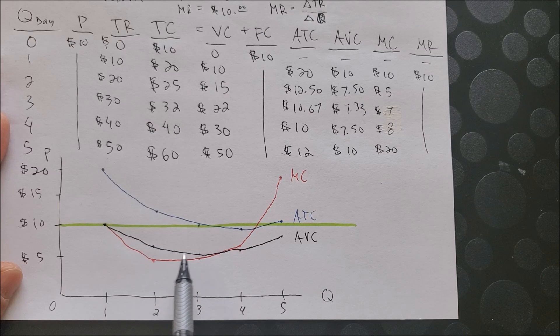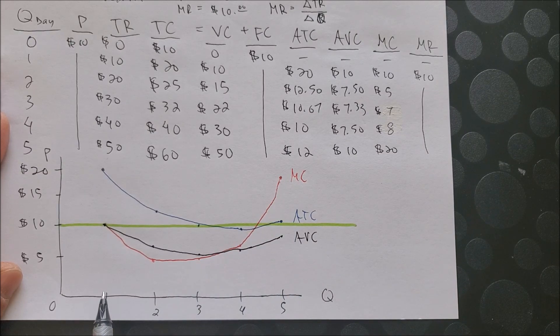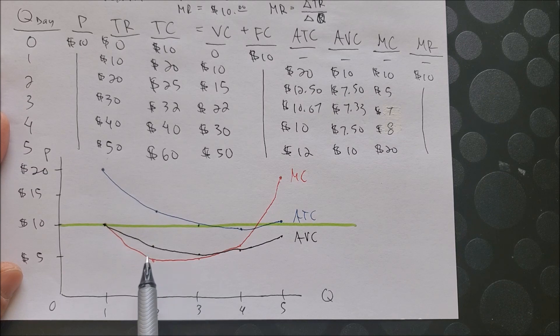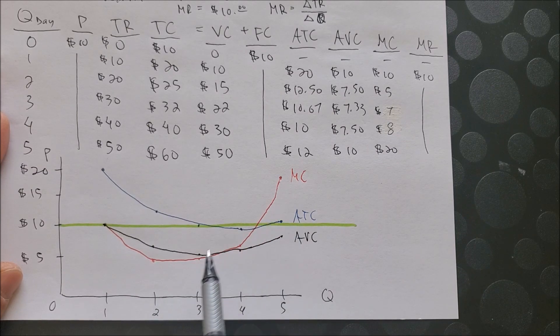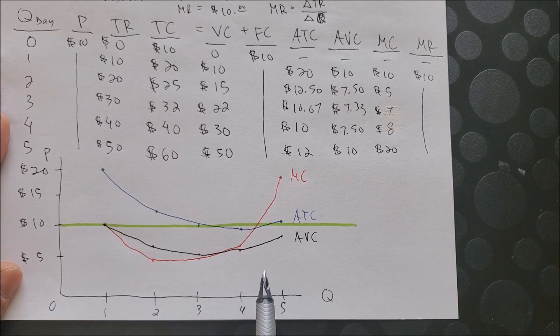Now the marginal cost is in red, and again, when you are going to wash one more vehicle, you can kind of see how the cost is going to increase as you are going to wash one more vehicle.